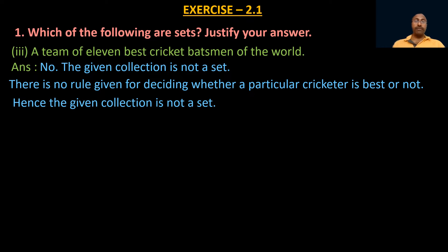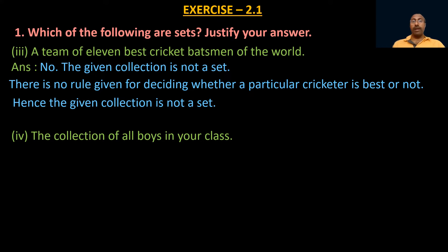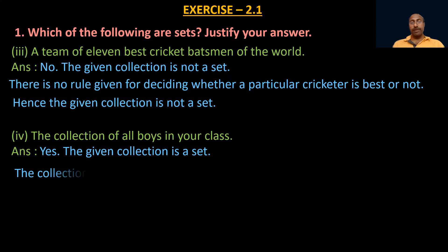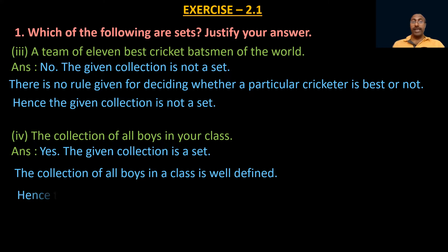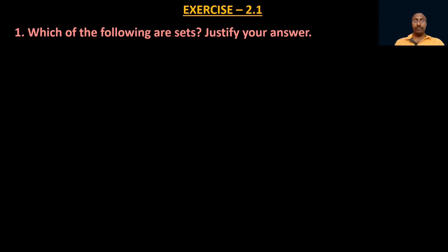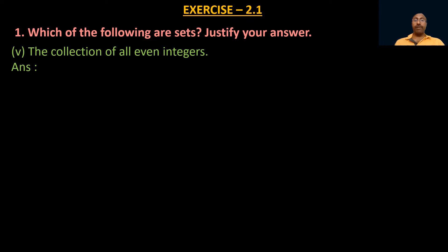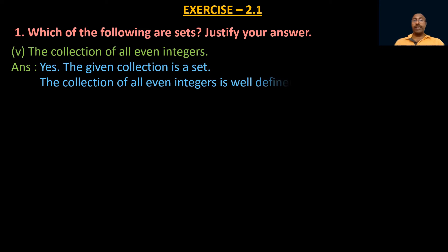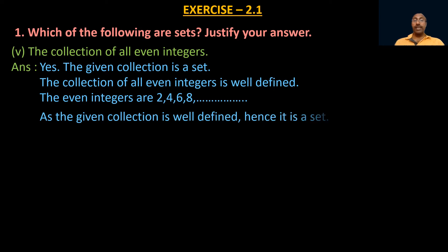Fourth one: the collection of all boys in your class. We know all the boys in our class, so the collection is well defined. Hence the given collection is a set. Fifth one: the collection of all even integers. We all clearly know which numbers are even integers, so this collection is also well defined. Hence the given collection is a set — the even integers are 2, 4, 6, 8, and so on.